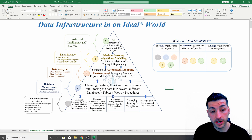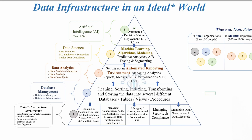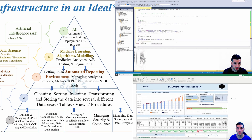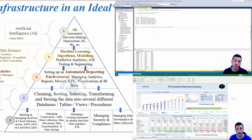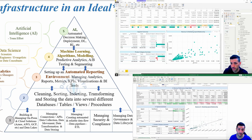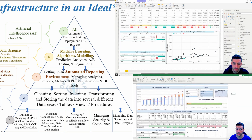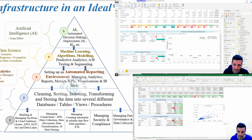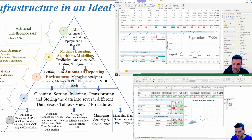The next team is the data analytics team, which consists of data analytics managers, data analysts, and data consultants. Their main priority is to create an automated reporting environment for the business. So they have to manage analytics, create new reports, analyze metrics, analyze key performance indicators (KPIs), create new visualizations, create new business intelligence tools, and provide insights back to the business.